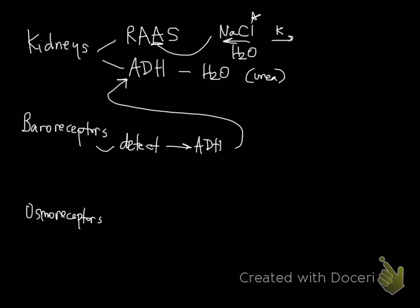Plasma osmolality is also sensed by osmoreceptors, which are also within the hypothalamus. The hypothalamus is exceedingly important. This responds to hyperosmolality. One of the things that increases plasma osmolality is sodium.